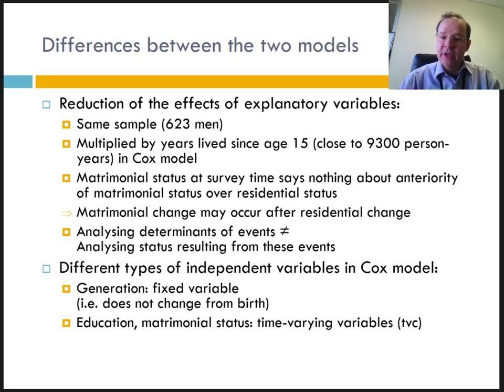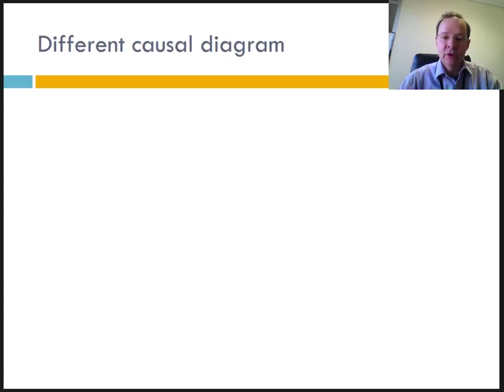Although the generation is a fixed variable, its effect is not the same in both models, because the generation acts throughout the life of the individual since the age of 15 for the Cox model, but only at the survey date for the logit model.